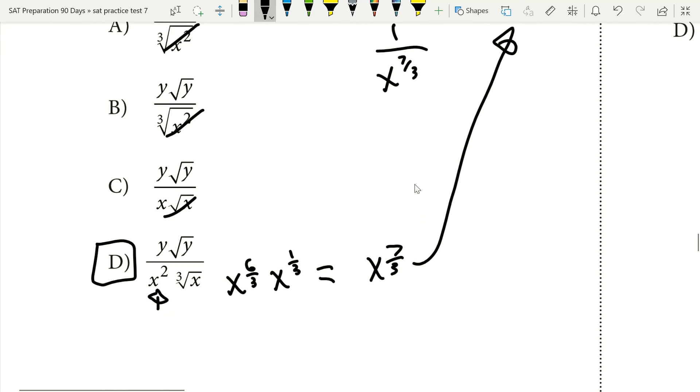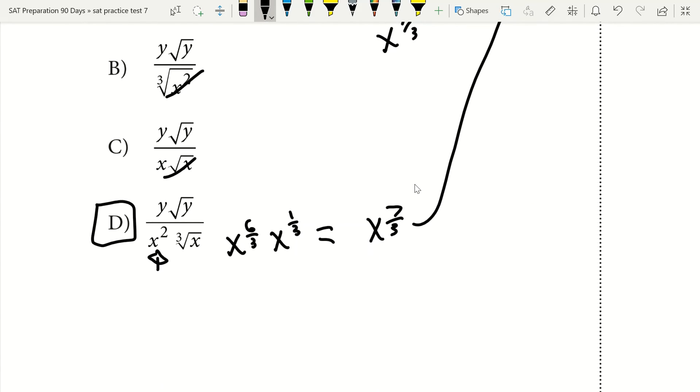Okay, y to the three-halves. We go down, take a look at d. We see d has y to the three-halves because y to the three-halves is equal to y times the square root of y. That's y to the one and then times the square root of y, which is y to the one-half. You add those, you get y to the three over two power.